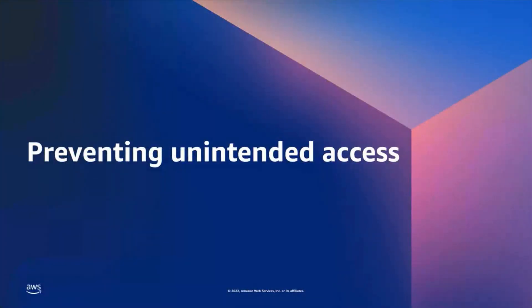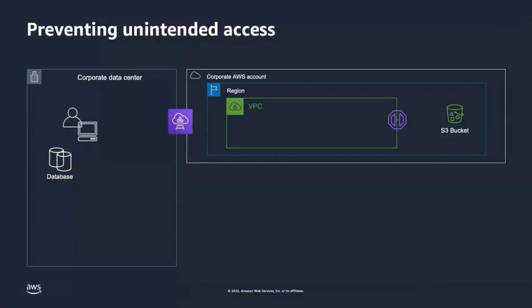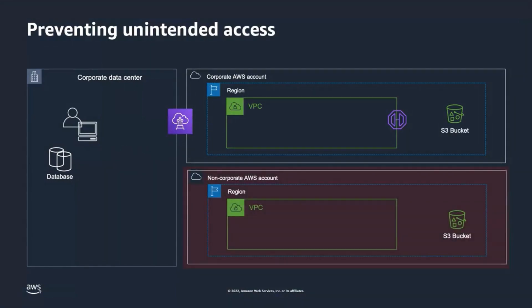When you store your sensitive data in your corporate environment, which may include on-premises networks and AWS clouds, you would want to prevent this data from making its way out of that network to untrusted locations. Untrusted or external locations usually refer to resources which do not belong to your AWS organization — those are S3 buckets, SNS topics, and other resources that do not belong to your organization boundary.